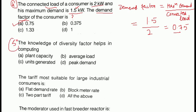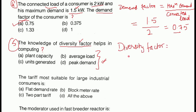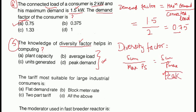Next is question number 5. The knowledge of diversity factor helps in computing what? As you know, diversity factor equals the sum of individual maximum demands divided by the maximum demand of the power station — also called the peak demand. Maximum demand and peak demand are the same. If you know the diversity factor and individual maximum demands, you can calculate the peak demand. Therefore option D is the correct answer.